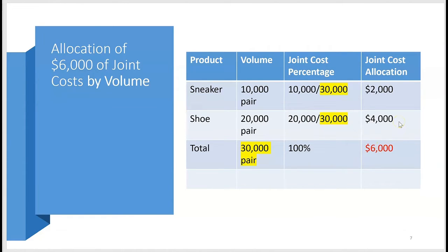This is how we allocate joint cost to finished products based on pure volume. We call it pure volume because we don't care what the sneaker ultimately sold for. The ten thousand pairs of sneakers might have sold for five times more than the twenty thousand pairs of shoes, but we don't take any of that into consideration when using the volume method to allocate joint costs.